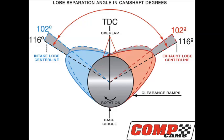Lobe separation angle. This is the relationship between the center lines of the intake and exhaust lobes. A 110 degree lobe separation angle means that the peak opening points of the intake and exhaust lobes are 110 degrees apart. This is ground into the cam and cannot be changed without changing the cam. Lobe separation angle is another way of expressing overlap — the amount of time that both valves are open at the same time. When both valves are open, cylinder pressures drop. A cam with 106 degrees of lobe separation will have more overlap and a rougher idle than one with 112 degrees, but it usually makes more mid-range power.